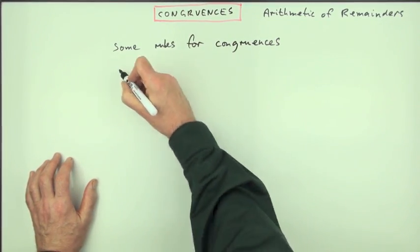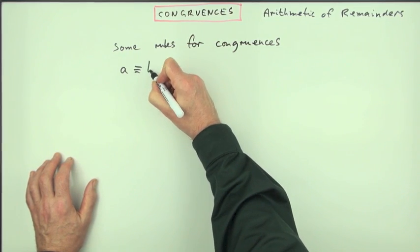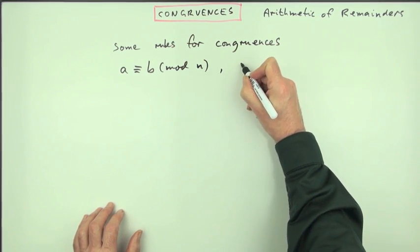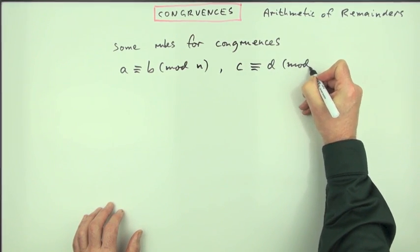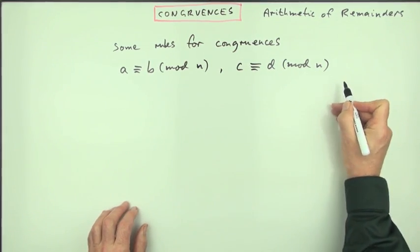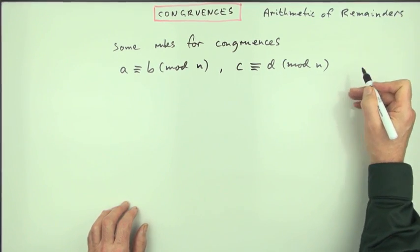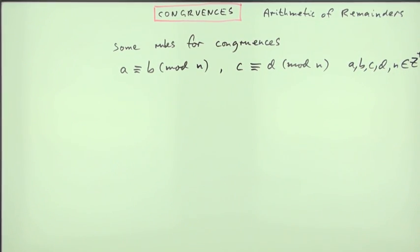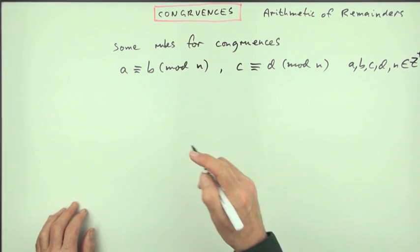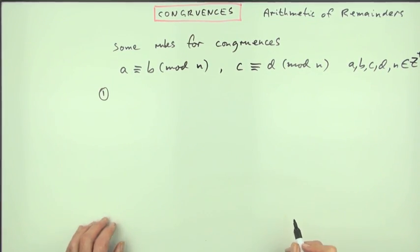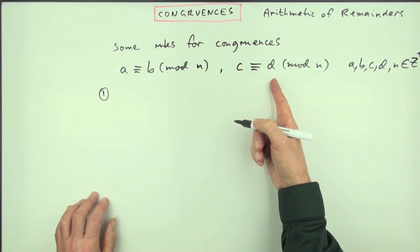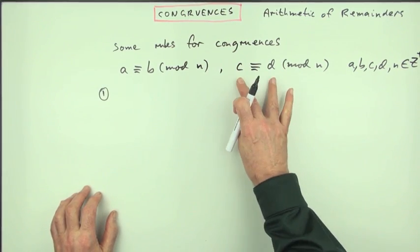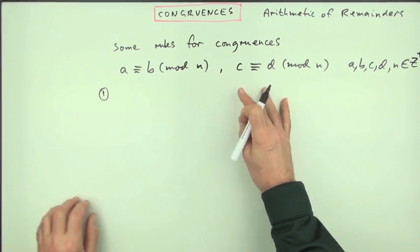Some rules for congruences. If a number a is congruent to b, mod some number or other, and another number c is congruent to d, mod that same base. Noting that here there are no fractions involved. These are all going to be integers. A, B, C, D and N are all going to be integers, in particular positive integers. If that's the case, then there are three worthwhile ones to remember. If A is congruent to B and C is congruent to D, that means as far as this division is concerned, both of them would give the same remainder.